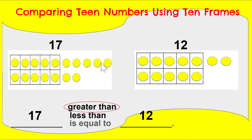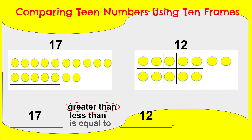You know that the number 17 is more than the number 12. If we gave them each a partner, they each have one 10 frame, so those ones inside would each get a partner. And then some extras would get partners too. But these extra five friends — do they get partners? No. So that tells me that the number 17 is greater than the number 12. Say it with me: 17 is greater than 12. Great job, boys and girls. Thank you for practicing comparing teen numbers using 10 frames with me.